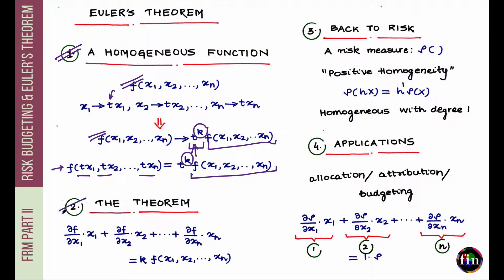Now comes Euler's theorem. It expresses the condition of homogeneity with degree k in an alternative way. It says that a function is homogeneous with degree k if the following holds: the partial derivative of f with respect to x1 times x1, plus the partial derivative with respect to x2 times x2, and so on all the way to xn, sums to k times the value of the function at x1, x2, ..., xn.